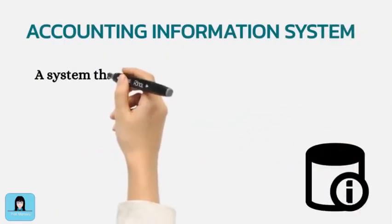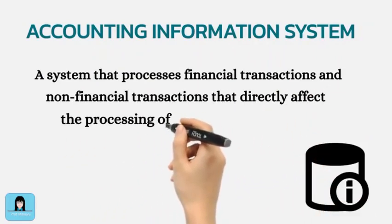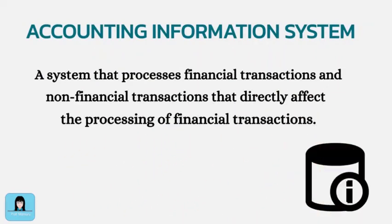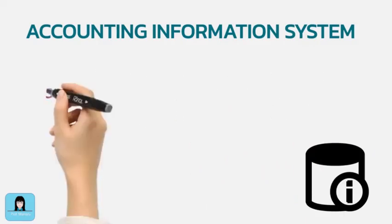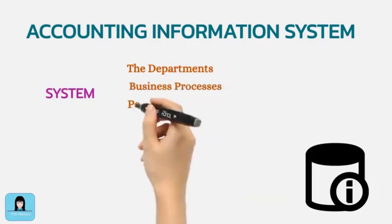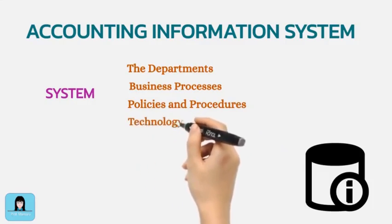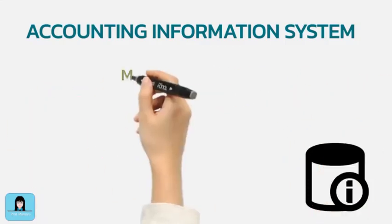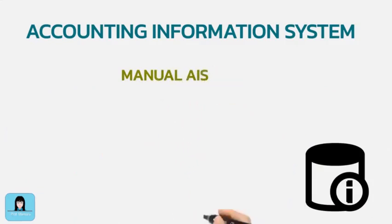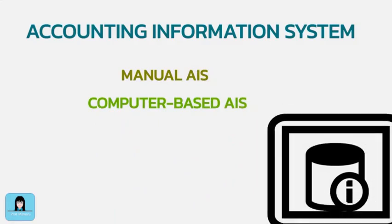Accounting information system is a system that processes financial transactions and non-financial transactions that directly affect the processing of financial transactions. The system is made up of departments and its people, business processes employed, adopted policies and procedures, and implemented technology. Depending on the technology, the accounting information system can be manual, computer-based, or a combination.